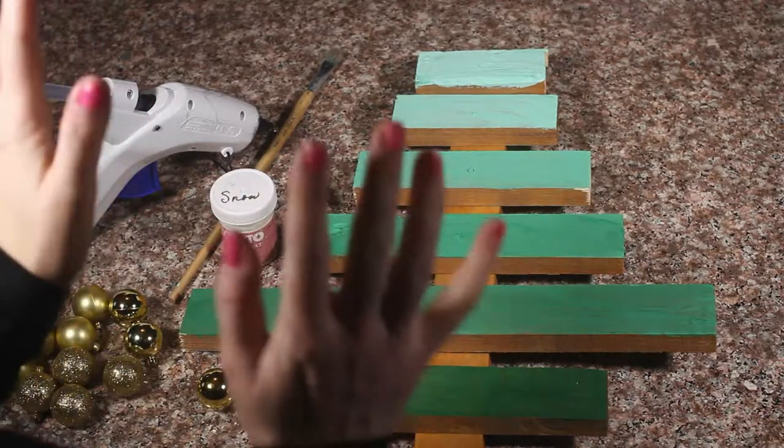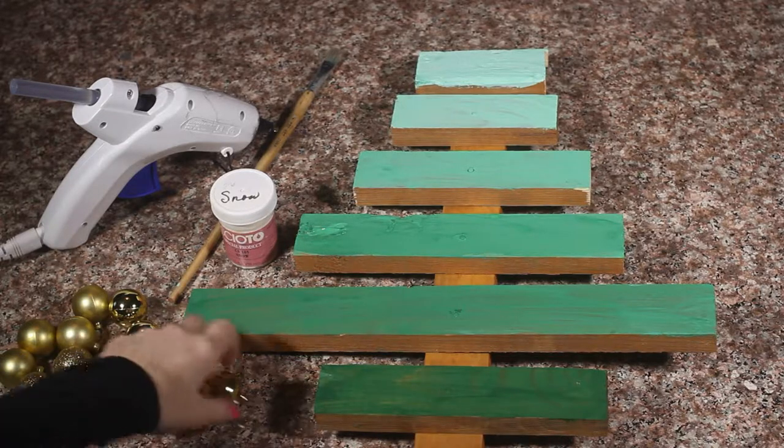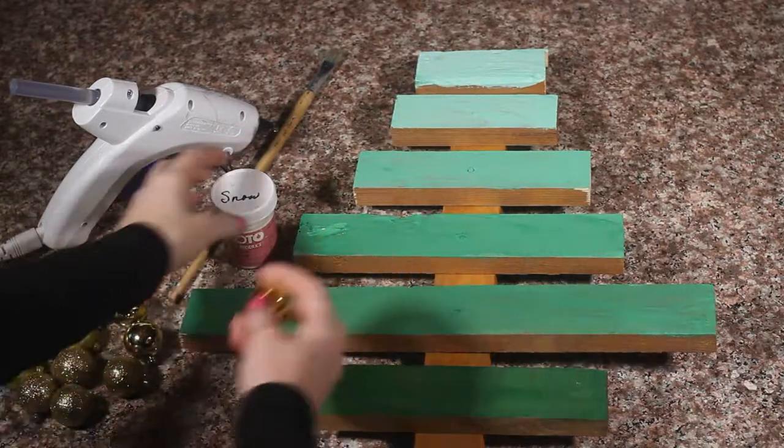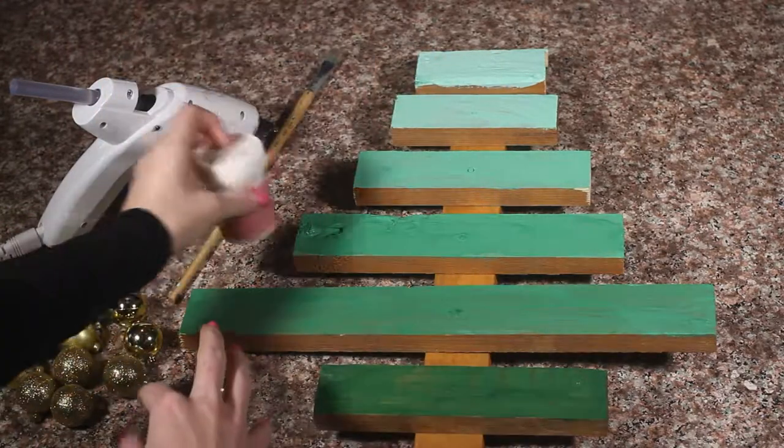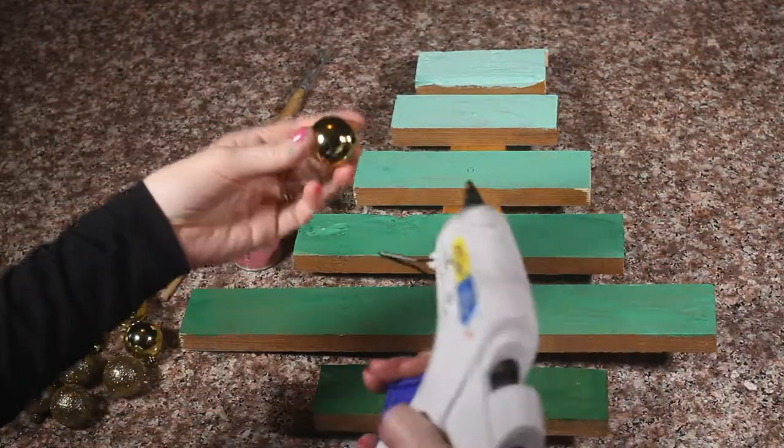Alright, so now that my paint has dried, I'm going to decorate it. And to decorate it, I'm going to use some Christmas ornaments, some fake snow which I'll show you how to use, and a paintbrush and a glue gun. So I'm just going to start gluing my ornaments on.